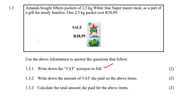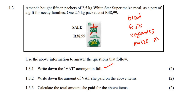Next question: write down the amount of VAT. Before you go and calculate, you need to remember that there are certain items that don't get VAT — things like bread, fruit. There's a whole list of things, but certain items don't get VAT. And one of those is maize meal. Maize meal is a zero VAT item. So here we have maize meal, and we are going to pay zero VAT.